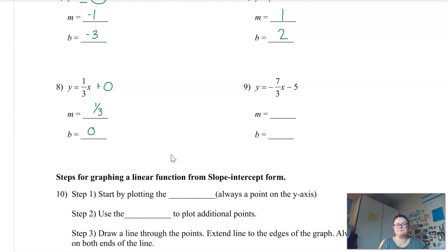Okay, and this last one should be pretty easy. I want you to write down what you think it is, and then check your answer with me. So hopefully you got negative seven over three for the slope, and then negative five for the y-intercept.